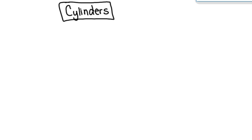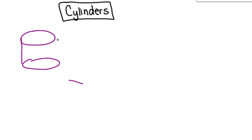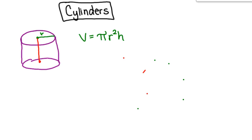In this video we'll explore cylinders and how to find their volume. A cylinder has two circular bases connected by its sides — think of a soup can or a can of beans. The formula for finding the volume of a cylinder is: volume equals pi times the radius squared times the height, where r is the radius of the circular base. There are two ways you might be asked to find volume: in terms of pi, or rounded to the nearest cubic unit.